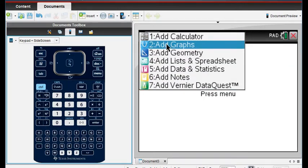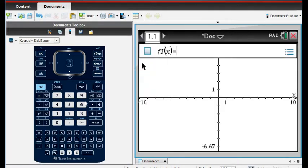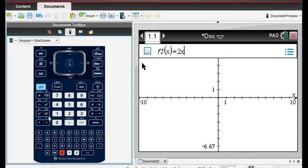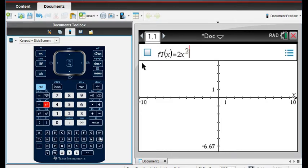So I'm going to go to option 2, add graph, and I'm going to type my equation in. So remember our equation is 2x squared plus 8x minus 3.